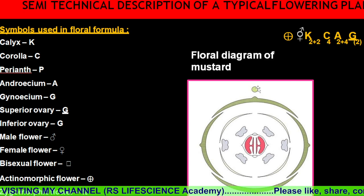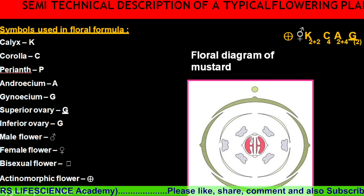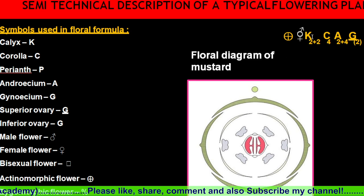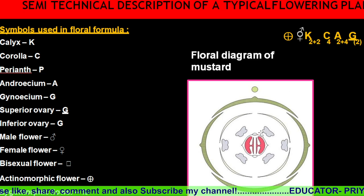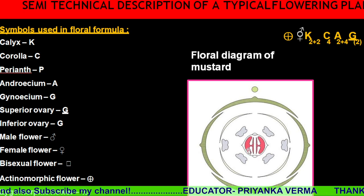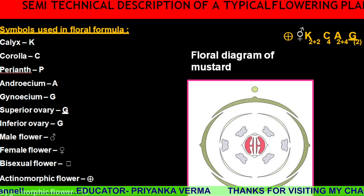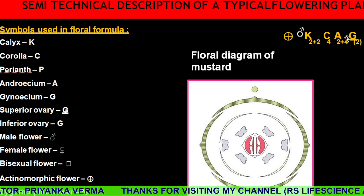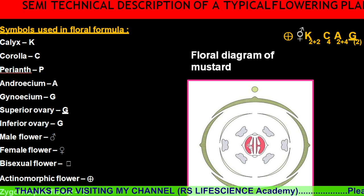The actinomorphic sign means radiosymmetry — it can be divided into equal parts at any particular point. Bisexual means it has both male and female parts. The gynosium can be bi-locular, meaning it has two lobes, and can be superior, represented as G with an underline indicating a superior ovary.